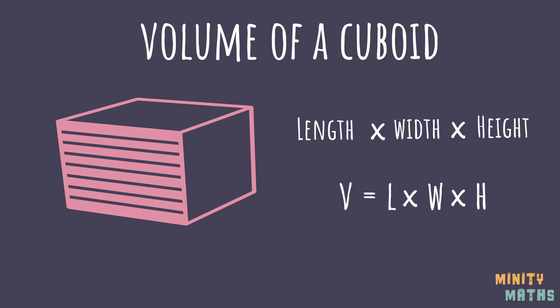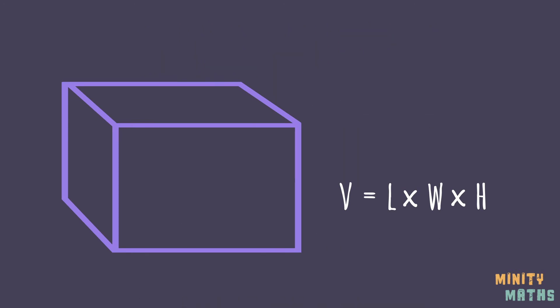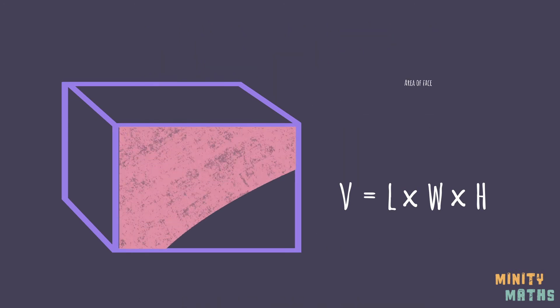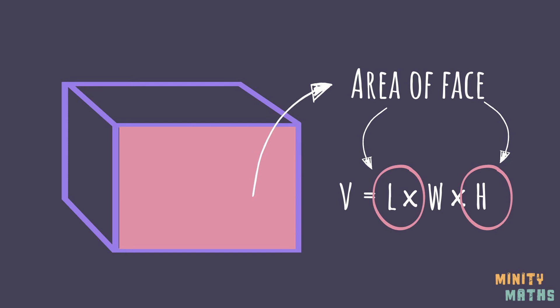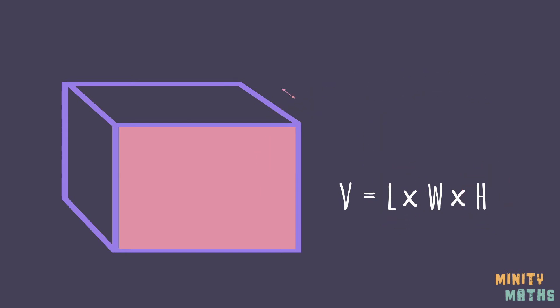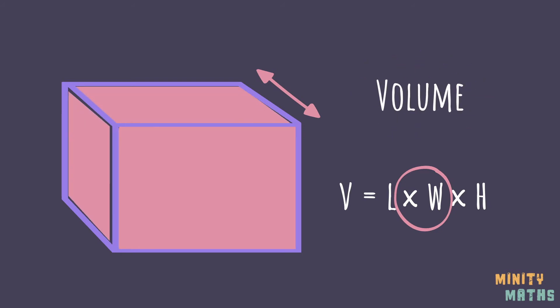In actual fact, all we are doing is finding the area of one of the faces. Then, when we multiply the area by the width, we are essentially finding out how many times the area will fit into the whole cuboid.